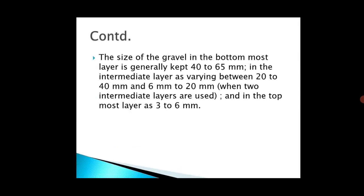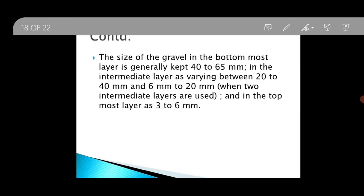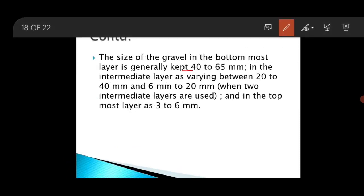The size of gravel in the bottommost layer is generally kept at 40 to 65 mm. In the intermediate layers it varies between 20 to 40 mm and 6 to 20 mm if two intermediate layers are used, and in the topmost layer it varies from 3 to 6 mm.